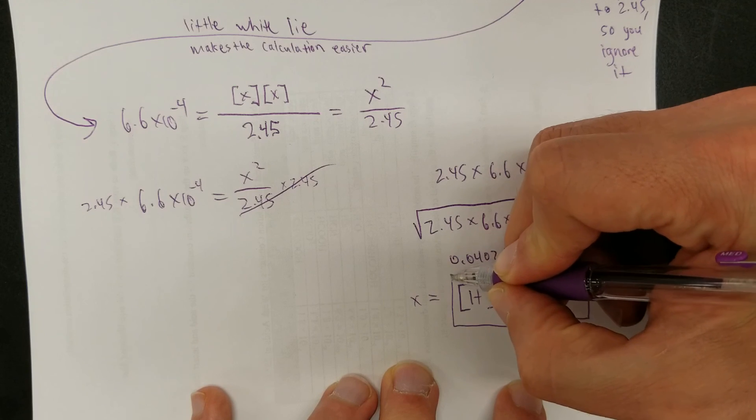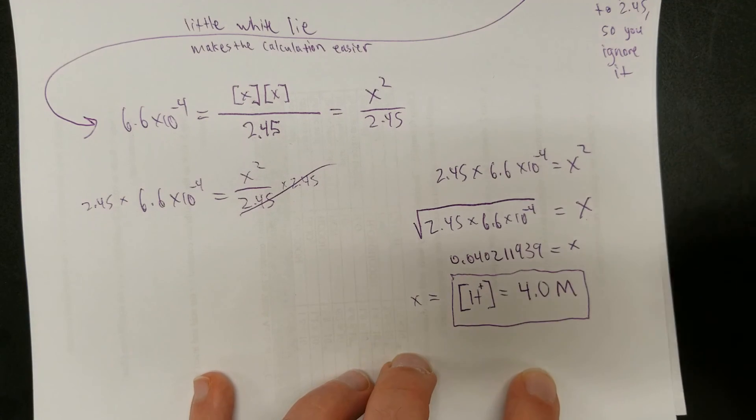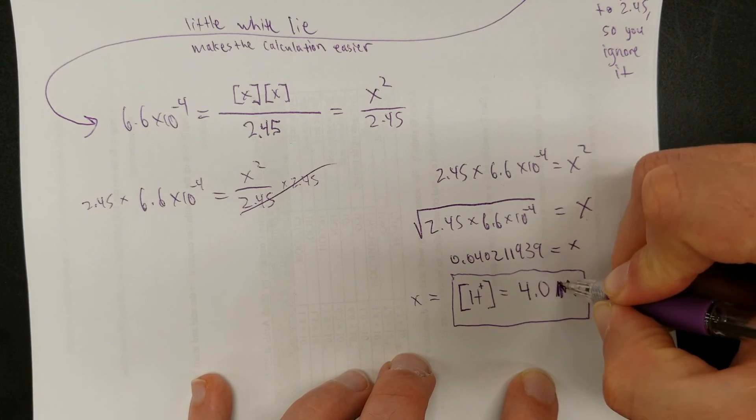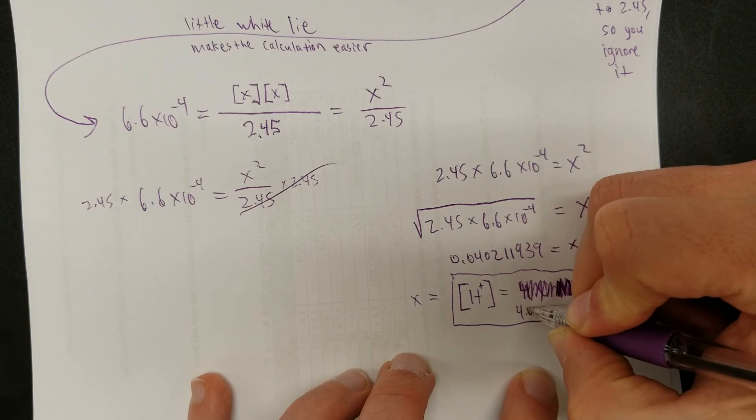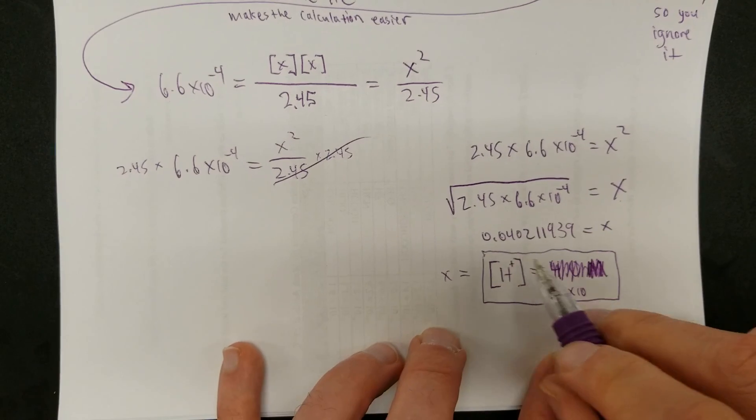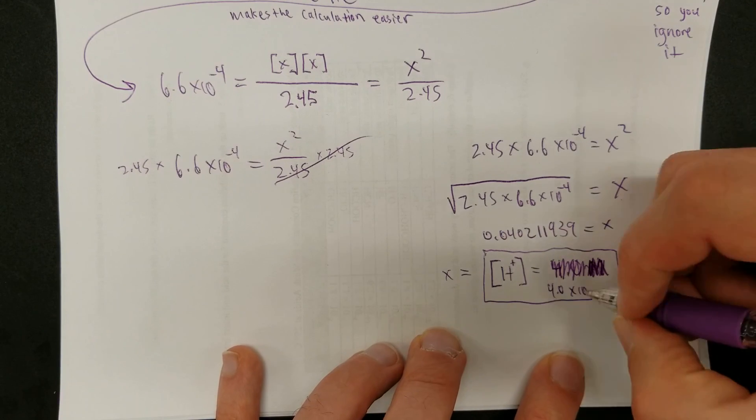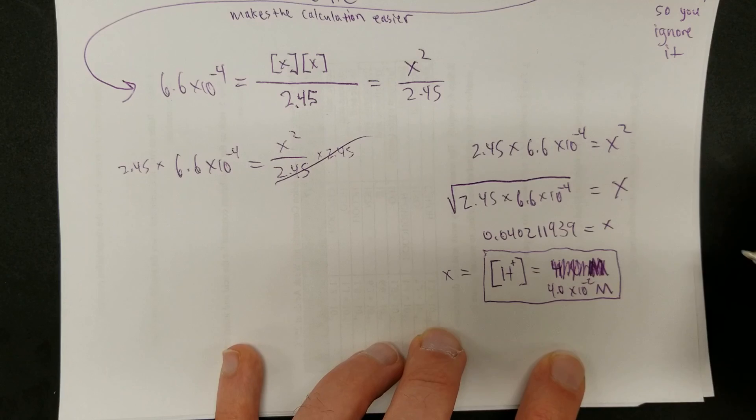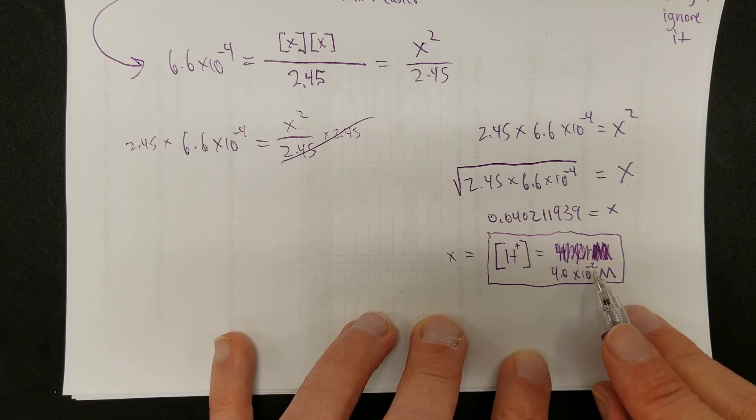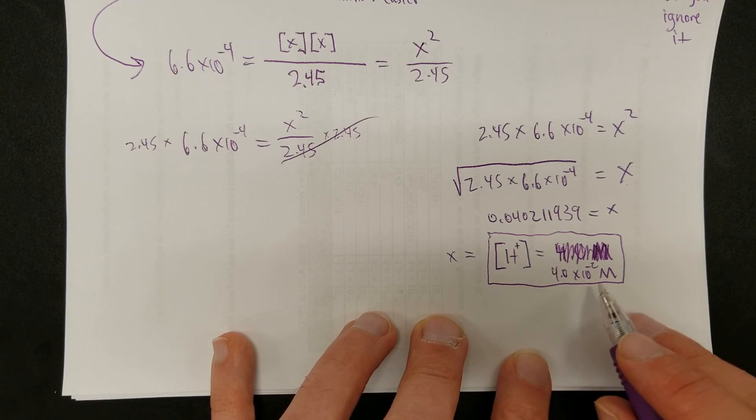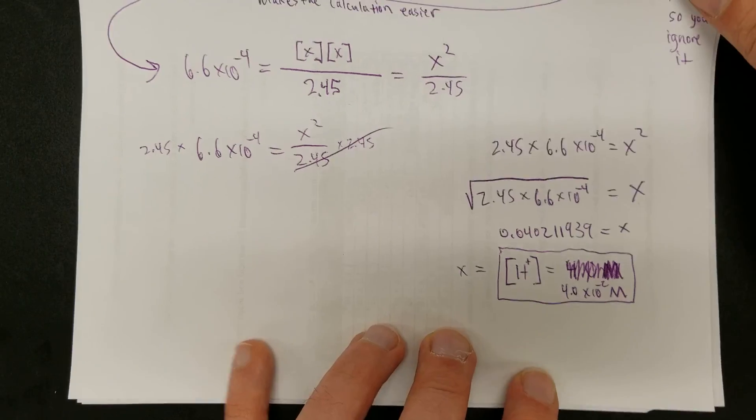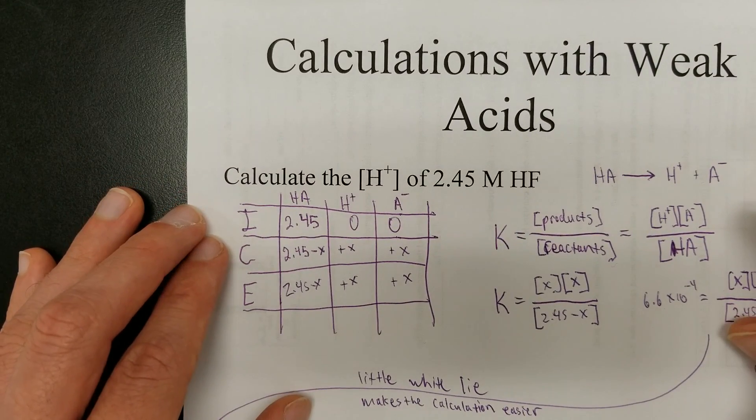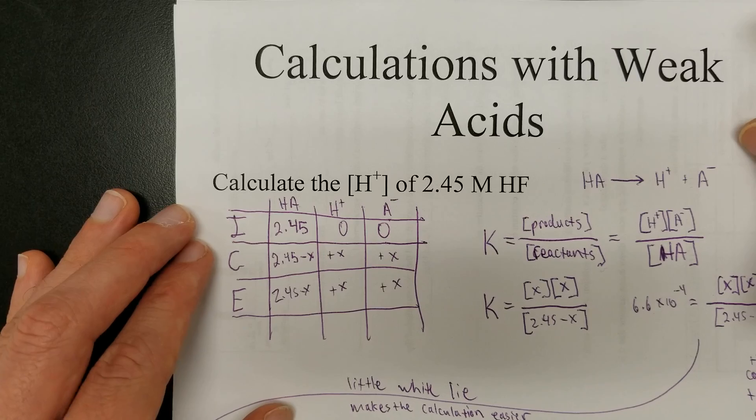Hydrogen ion concentration is 4.0... I had totally brain fart there. 4.0 times 10 to the negative second moles per liter. I want to be careful not to accidentally leave out this, but there's a huge difference between 4 and 4 times 10 to the negative second. So, this right here would be the correct answer that we're looking for when it comes to calculating the hydrogen ion concentration of a weak acid.